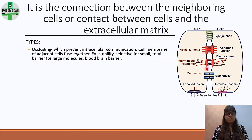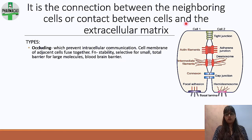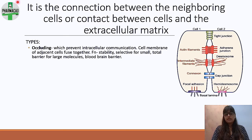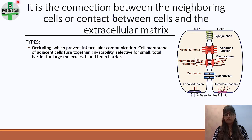The first type is the occluding junction. This prevents intracellular communication — the cell membranes of adjacent cells fuse together. Its functions are stability and acting as a selective barrier: it is permeable to small molecules but a total barrier for large molecules. It is also seen in the blood-brain barrier.